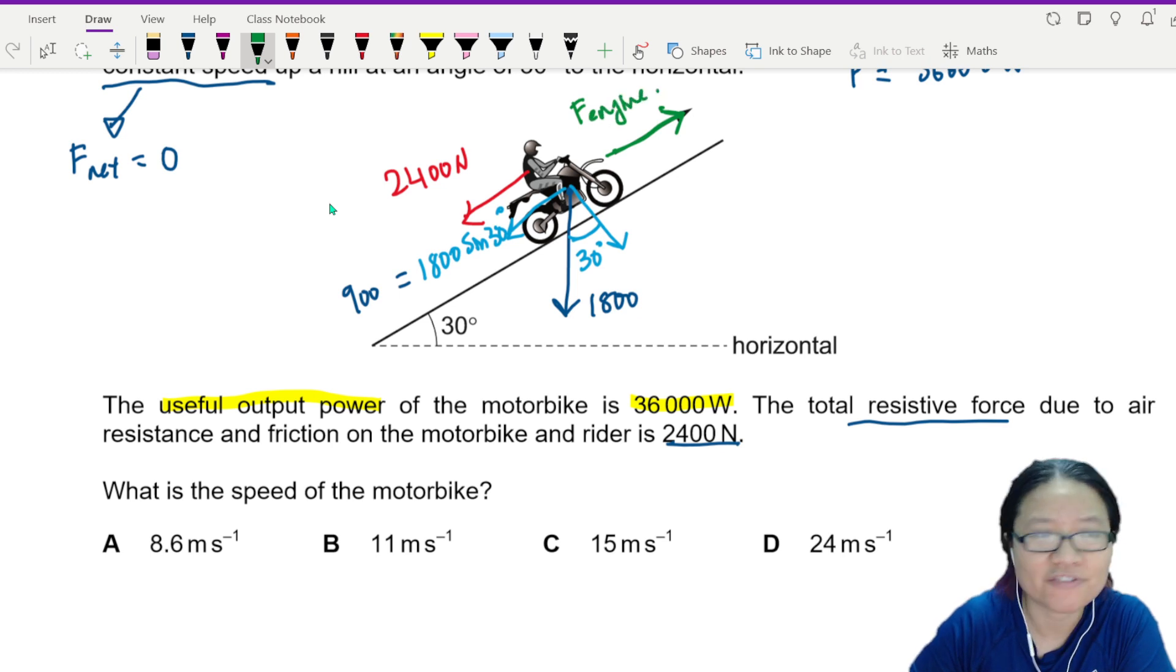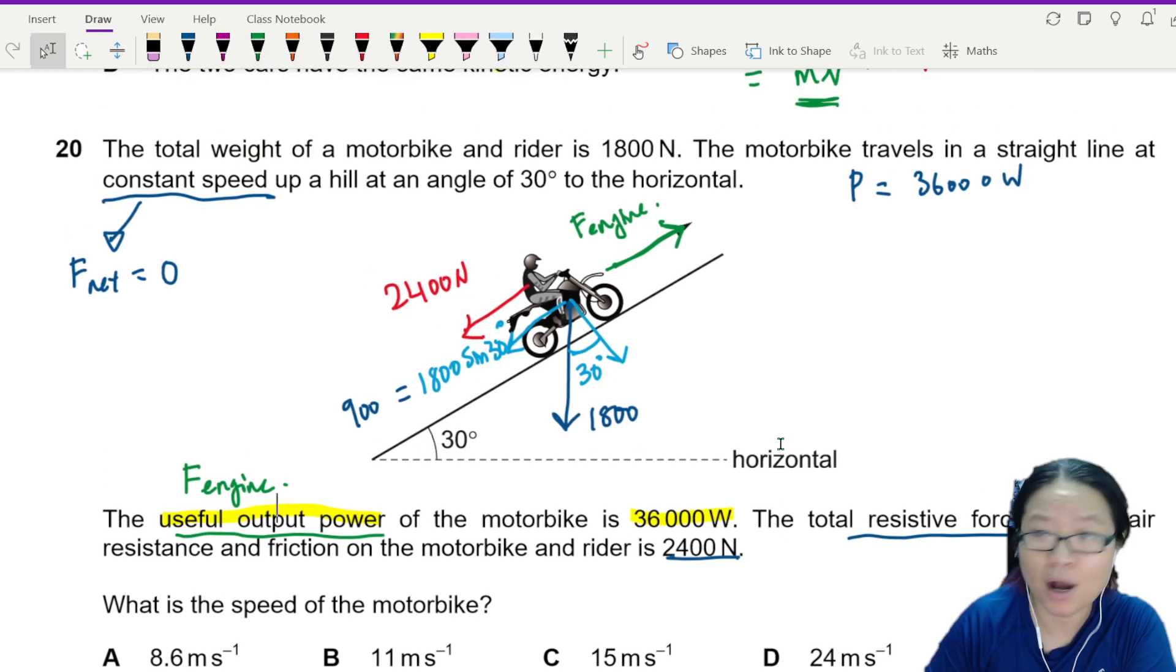The force of the engine is driving the motor up. So this is the useful output power that helps you, that is contributed thanks to the force of the engine. So on one hand, I will have power is equal to this much, but power is also equal to Fv. I can only use this equation if the velocity is constant.